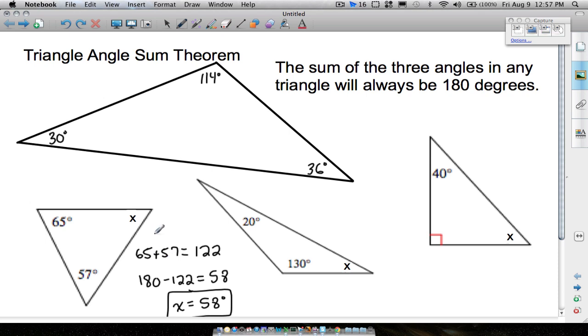And you can double check your work. What you can do is add all three of these numbers back up, add them back together. 58 plus 65 plus 57 is equal to 180 degrees. So that's our solution to this problem here.